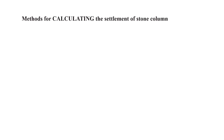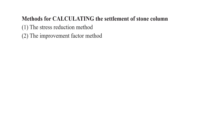Hello everyone. Today we shall talk about methods for calculating the settlement of stone column problems. We are going to talk about two methods: the first is called the stress reduction method and the second is the improvement factor method.